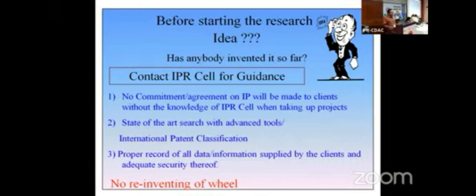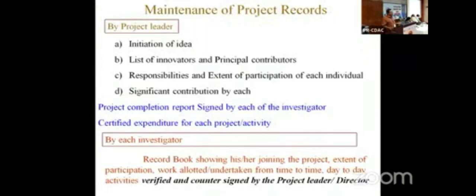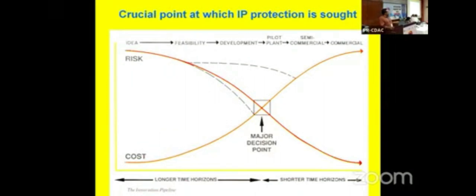Before starting any particular work, contact your IP cell — you need to search whether somebody else is already doing it in parallel somewhere in the world. Why reinvent the wheel? If someone is already doing it, stop that work and pursue something else. Maintain all project reports strictly from the initiation of the idea, listing innovators, with date-by-date work recorded in work diaries, signed by innovators and the project leader, and audited externally as proof in case of disputes.